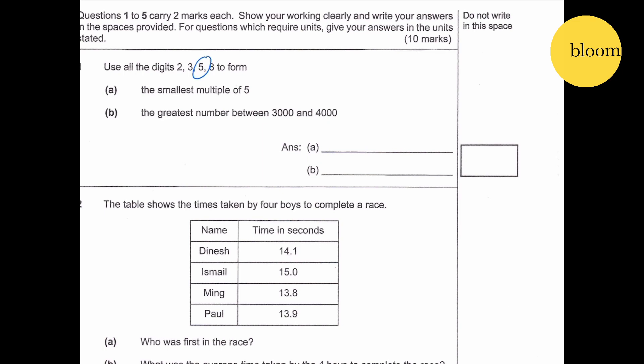And it's 5. Part B: The greatest number between 3,000 and 4,000. So the highest number that we can put over the thousand will be 3, because 5 is more than 4,000, 8 is more than 4,000. So next number will be the highest number we can put is 8, next highest number is 5, next highest number is 2. So the answer is 3,852.